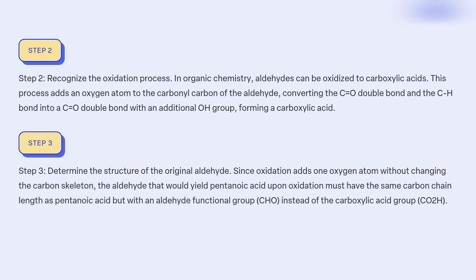Step 3: Determine the structure of the original aldehyde. Since oxidation adds one oxygen atom without changing the carbon skeleton, the aldehyde that would yield pentanoic acid upon oxidation must have the same carbon chain length as pentanoic acid, but with an aldehyde functional group CHO instead of the carboxylic acid group COOH.